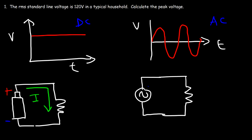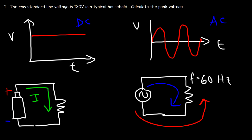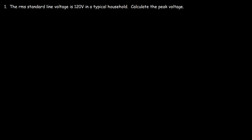In one instant the current is traveling in one direction, and then in another instant it's traveling in the opposite direction. It oscillates 60 times per second, so the frequency is 60 Hertz — it constantly reverses 60 times in a single second. That's the difference between direct current and alternating current.